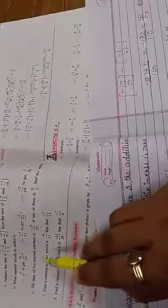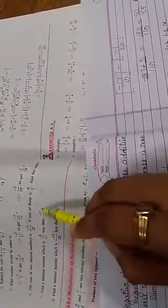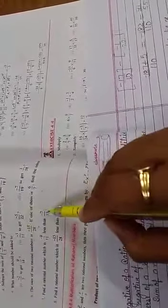Find a rational number which is minus 9 upon 11 less than minus 7 upon 33. You have to find the rational number which is minus 9 upon 11 smaller than minus 7 upon 33. Like a number which is 2 less than 5, what will we do? We will subtract them and get the answer. In the same way we will solve this question.